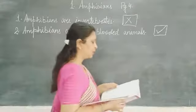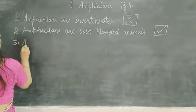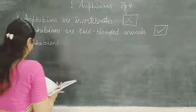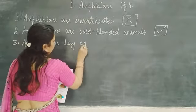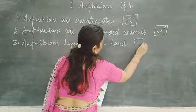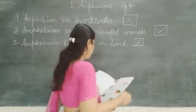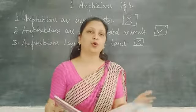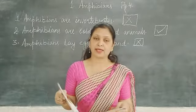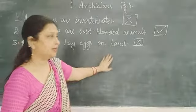Third point is: amphibians lay their eggs on land. This is also a wrong statement, because most amphibians — really all amphibians — lay their eggs in moist places. Frogs and toads lay their eggs in a jelly-like mucus. So they do not lay eggs on dry land. This is wrong.